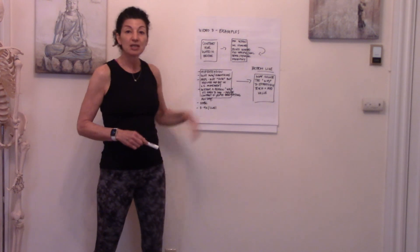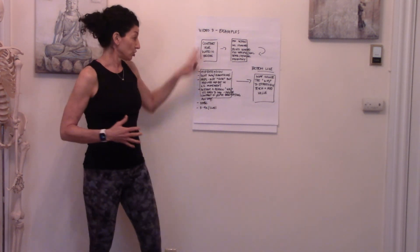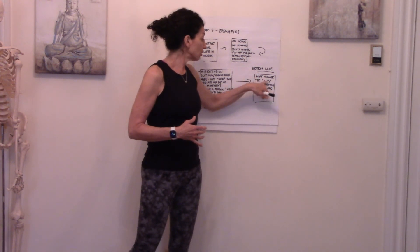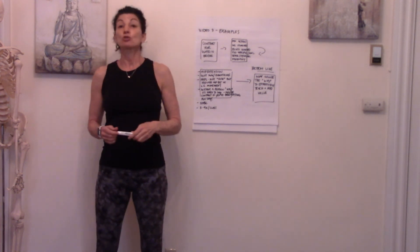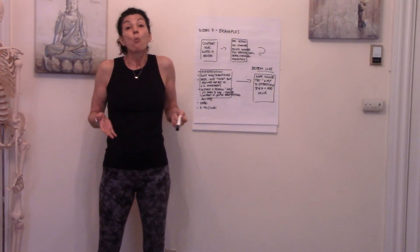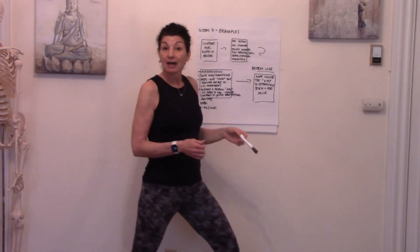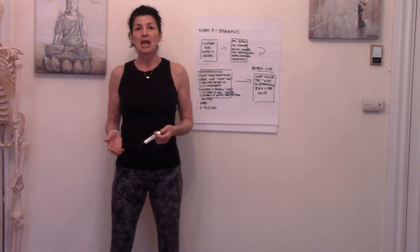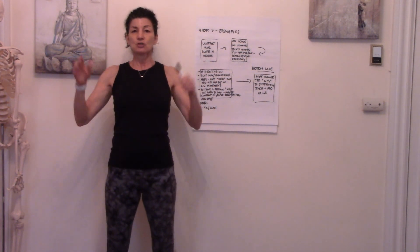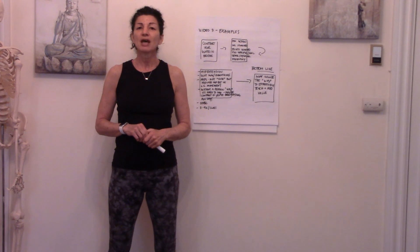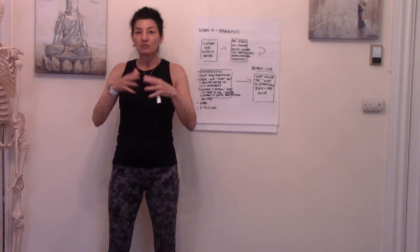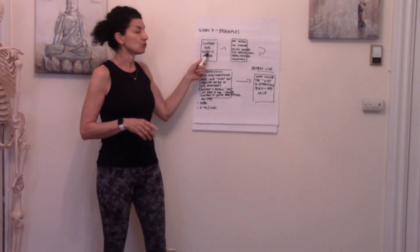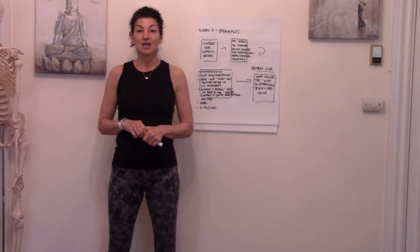At the end of the day, when you analyze 'contract your glutes in bridge' across all these factors, the bottom line is: you must include the why to effectively teach and add value. If you're asking students to contract their glutes in bridge, you should explain why — because there are many other poses where you're not saying 'contract your erectors' or similar cues. This is a great way to pull back the curtain and really understand what's behind the cues you hear. We'll do one more example in the next video and then wrap up.